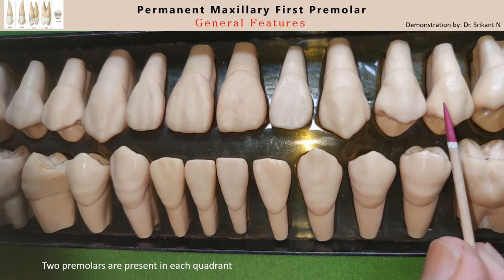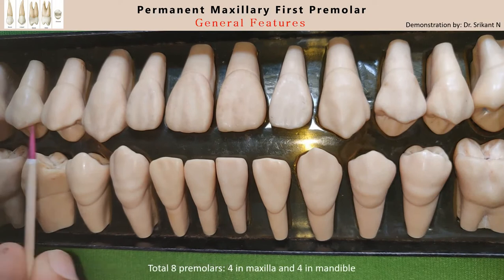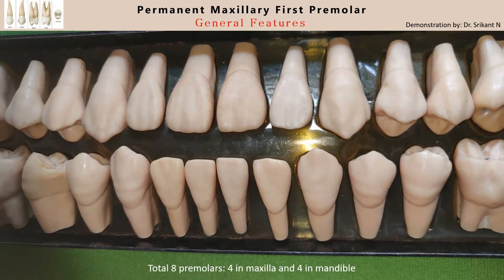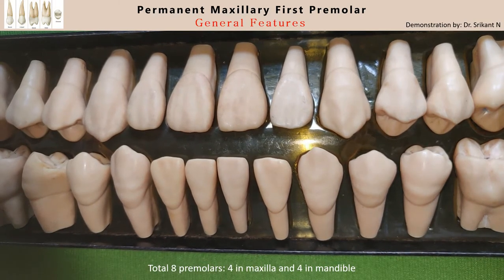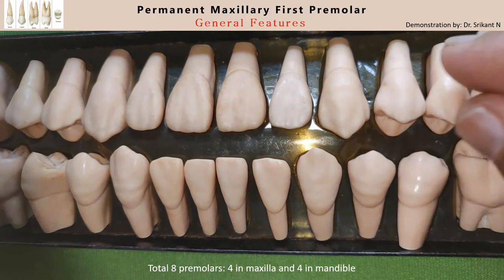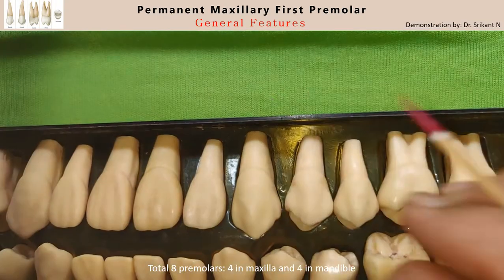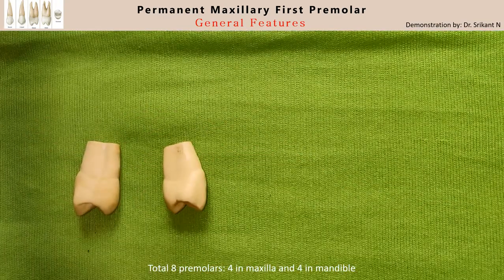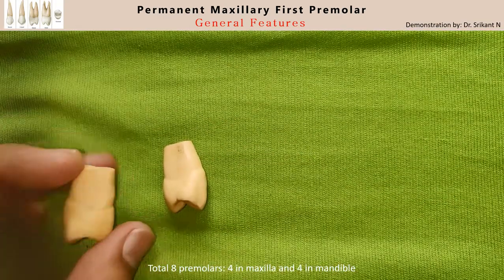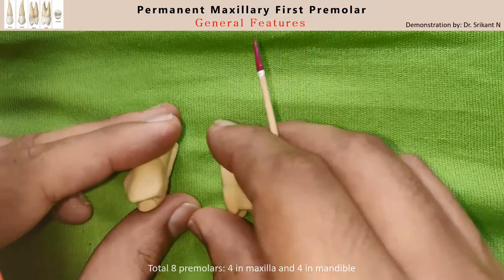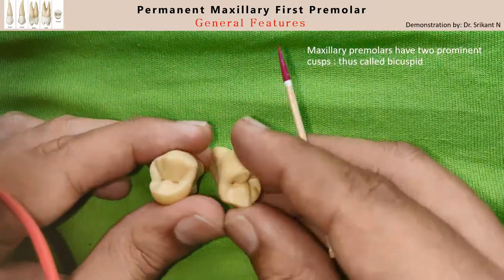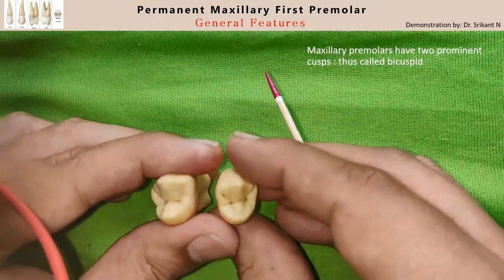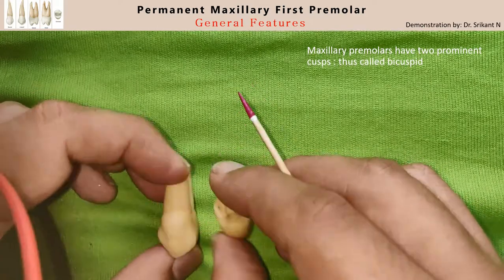That means four premolars in the maxilla and four premolars in the mandible. Let us pick up the maxillary premolars. The maxillary premolars have two prominent cusps, as you can see here.